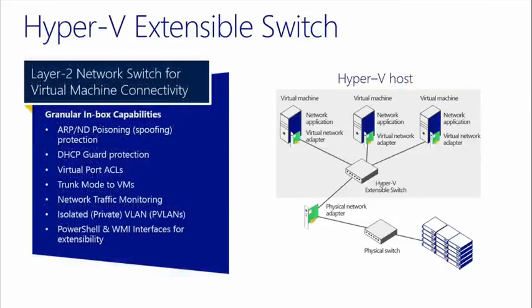One capability the extensible switch provides is protection against ARP and neighbor discovery poisoning, which is very common in network environments — protecting against spoofing and malicious attacks that impersonate different resources on the network. We also want to stop rogue DHCP servers and rogue routers. Specific settings exposed in the UI of Hyper-V Manager enable me to turn on those security capabilities. Virtual port ACLs let me implement a control mechanism defining what can communicate with what, and I can meter traffic for a particular virtual port.